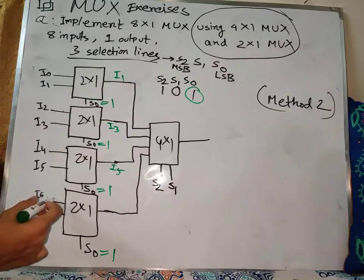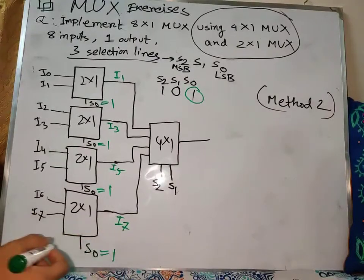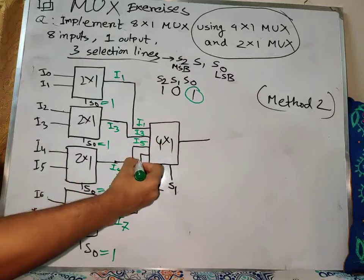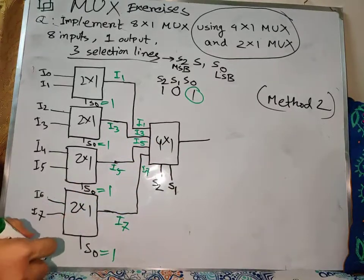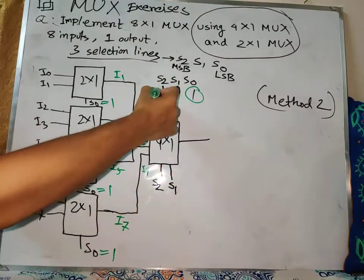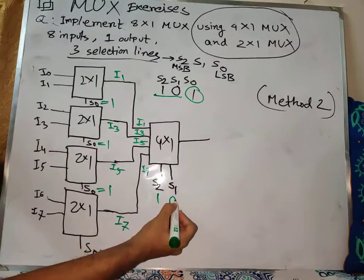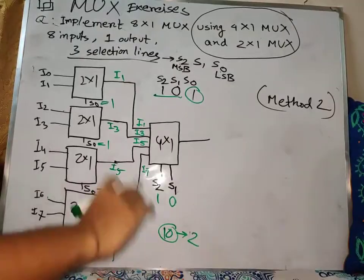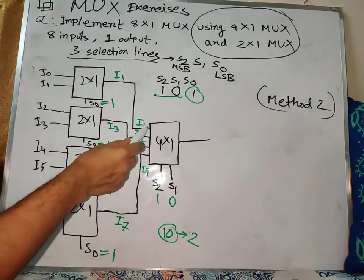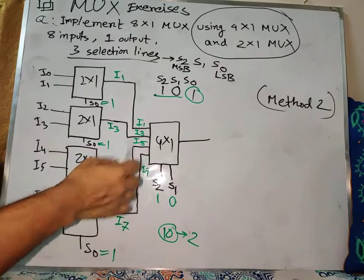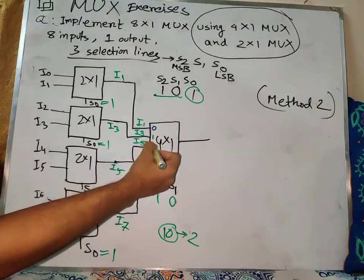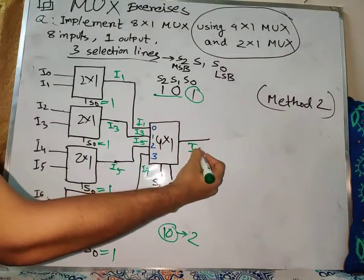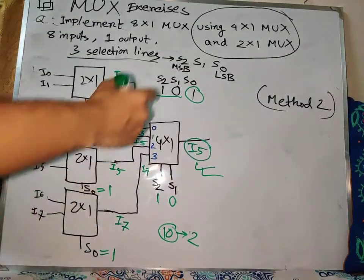i3 is active, then i4 and i5 are active, and finally i6 and i7. Basically i1, i3, i5, and i7 are the active lines. We are finding the active number line. Number line 2 is active — we have number lines 0, 1, 2, and 3 shown in different colors. Number line 2 is available at i5, so that will be the final output.